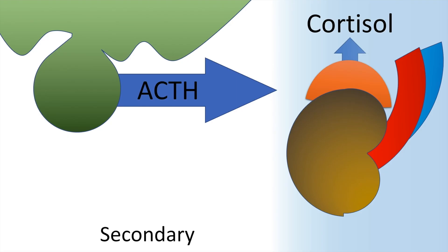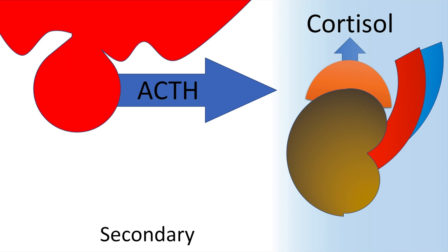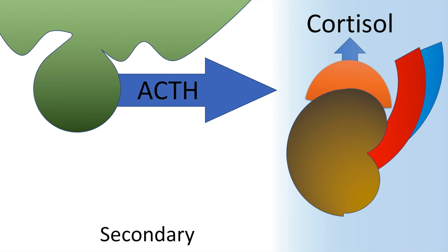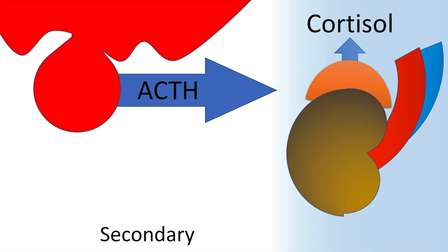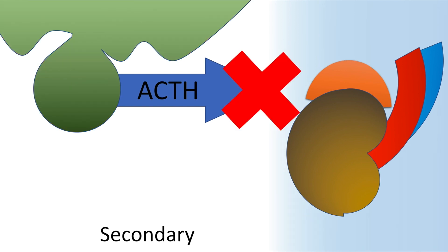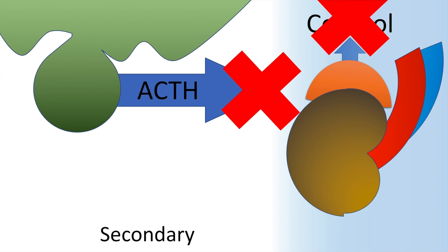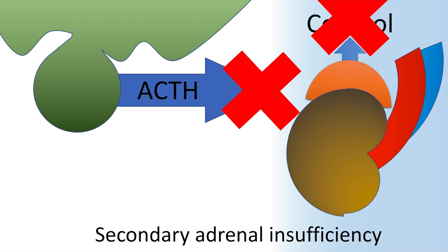Let us now look at secondary adrenal insufficiency. In this, there is a deficiency or defect in the pituitary gland. This results in low ACTH level. As a result, there is no cortisol. This is the basis of secondary adrenal insufficiency.